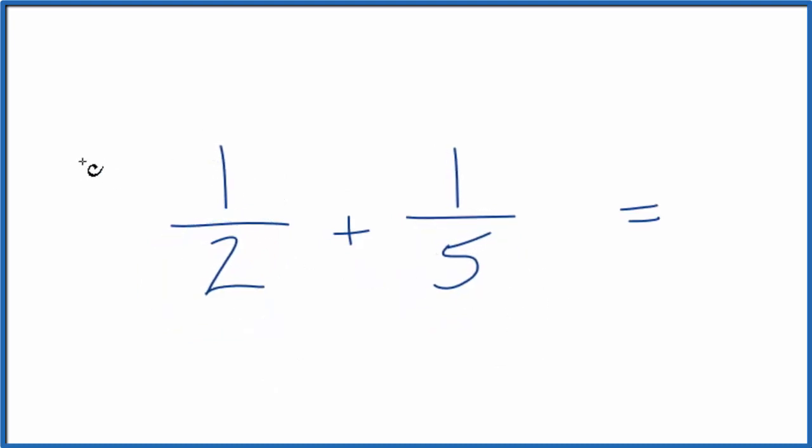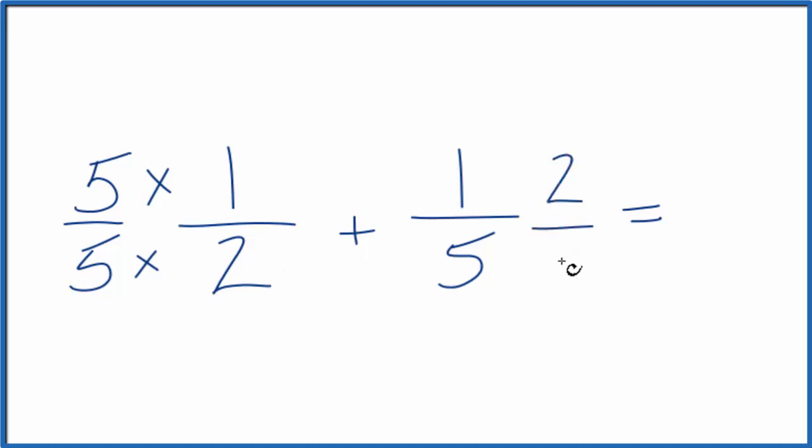So I'm going to multiply one-half by five over five, and then I'm going to multiply one-fifth by two over two.